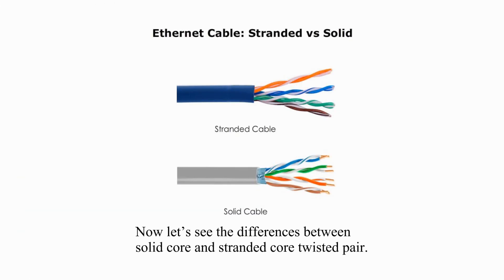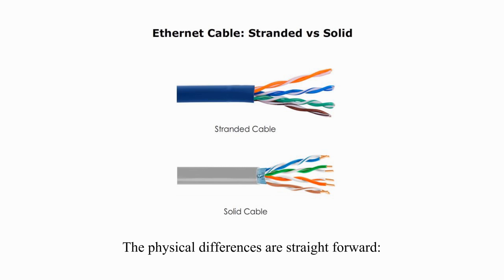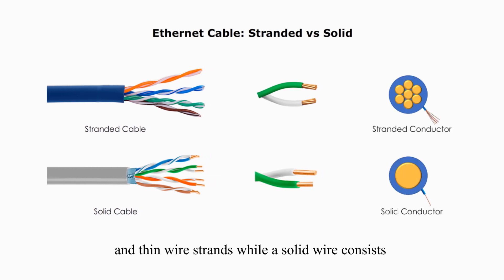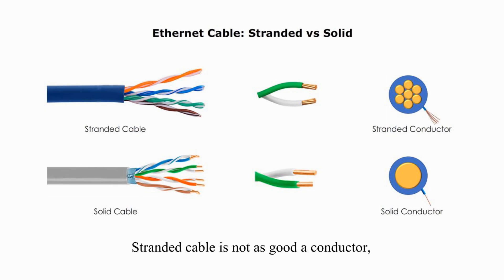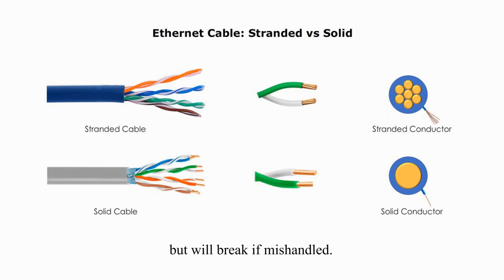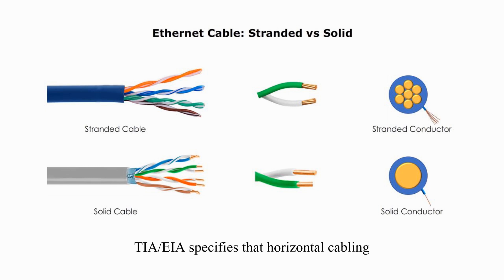Now let's see the differences between solid core twisted pair and stranded core twisted pair. The physical differences are straightforward. One stranded wire is made of a bundle of tiny and thin wire strands, while a solid wire consists of one solid and much thicker metal conductor. Stranded cable is not as good a conductor, but is more flexible and stands up to handling without breaking — it is good for patch cables. Solid core twisted pair cable is a better conductor, but will break if mishandled. TIA/EIA specifies that horizontal cabling should always be solid core twisted pair.